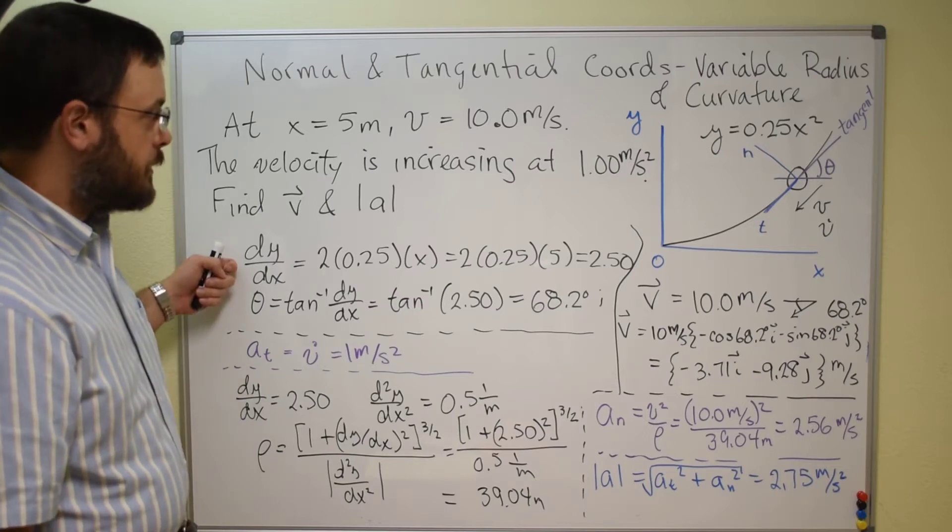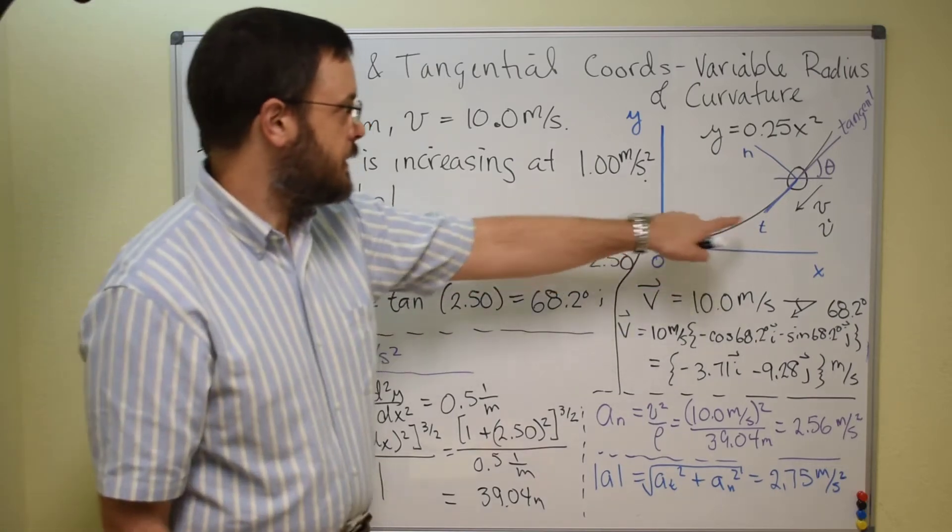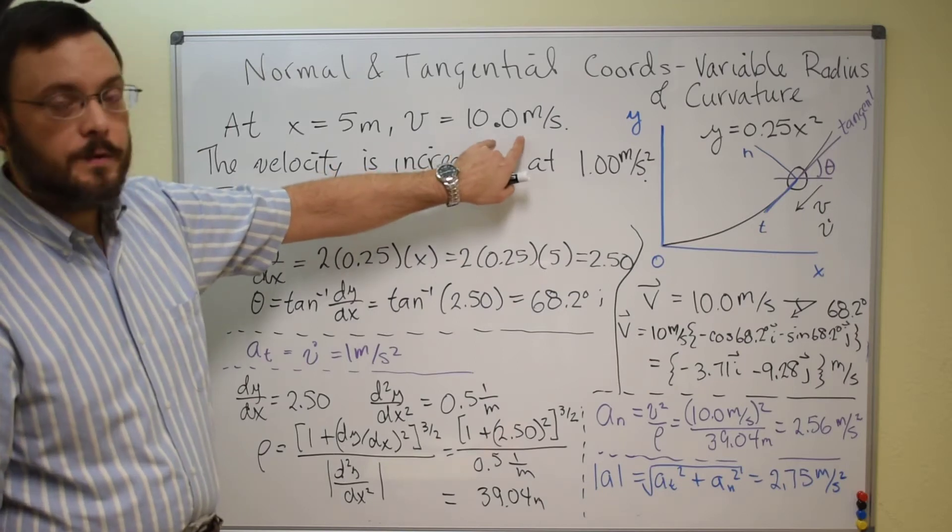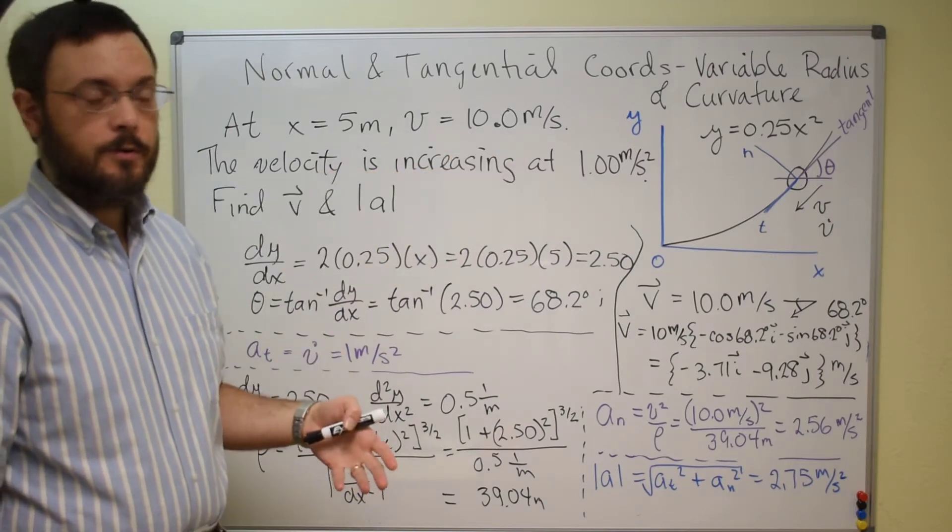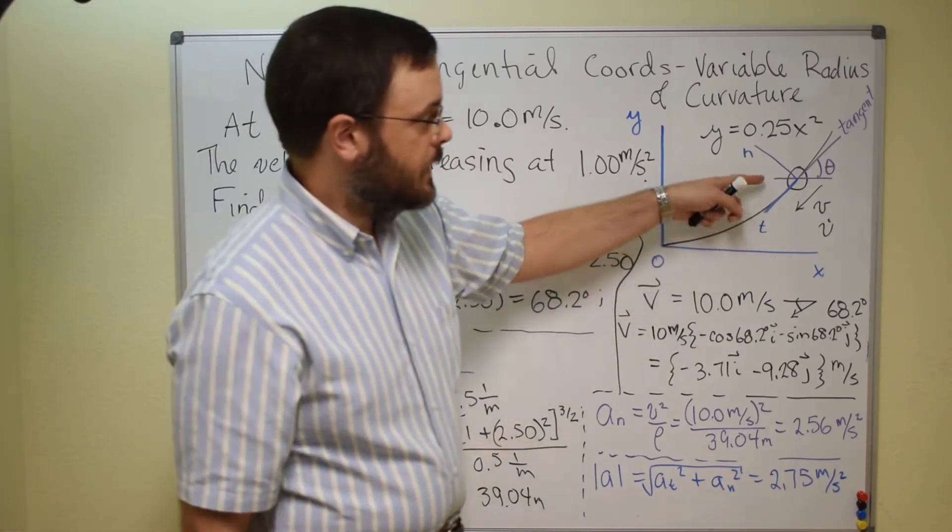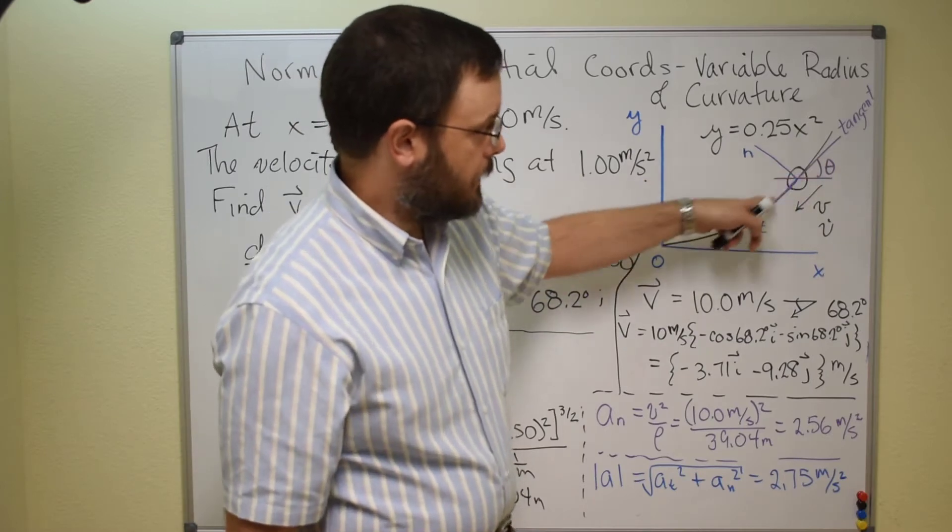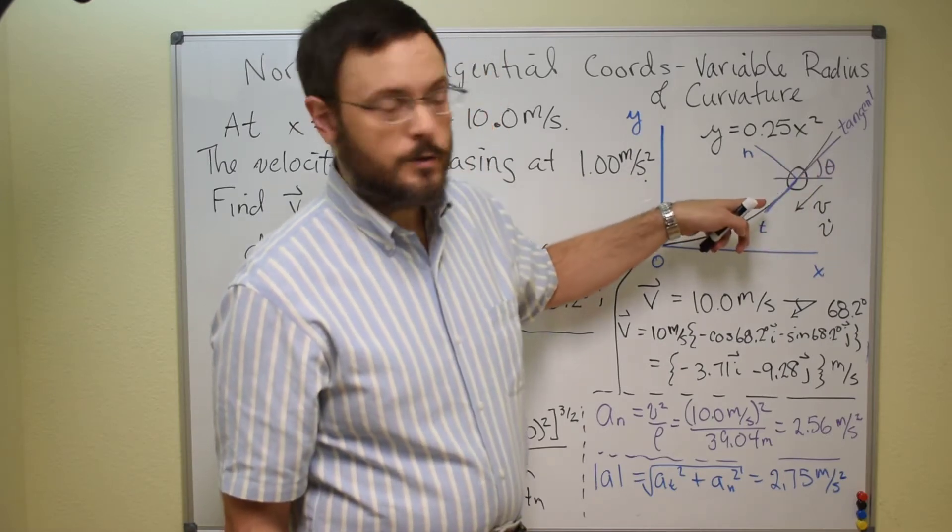So first off, if we're going to find velocity, we have a speed of 10 meters per second, but we don't have a direction. So if we think about the tangent as being aligned with the tangential direction,